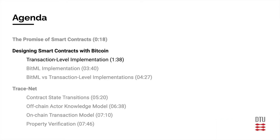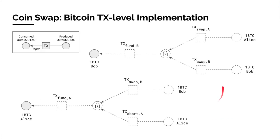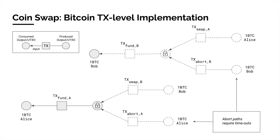In Bitcoin, coins are represented as outputs. These outputs are spendable by transactions, which in turn produce new outputs. Notice that in our implementation here, we have two separate subgraphs, thereby improving on-chain privacy. When Alice funds the contract, she has two possible paths: the swap and the abort path. If Bob doesn't show up, Alice can always wait for the timeout to expire and execute the abort path, thereby withdrawing her deposit.